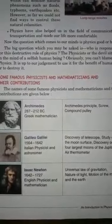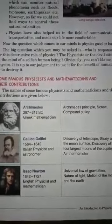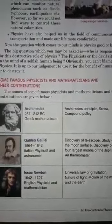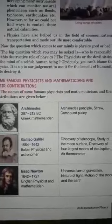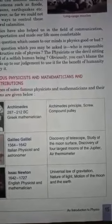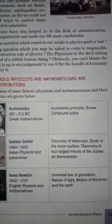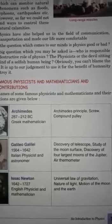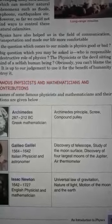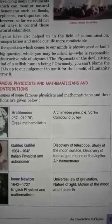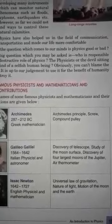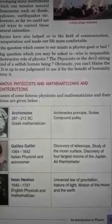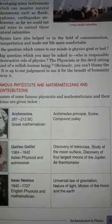Next is Galileo Galilei. He was an Italian physicist and astronomer. He discovered the telescope, studied the moon's surface, and also discovered the four largest moons of Jupiter and invented the air thermometer.